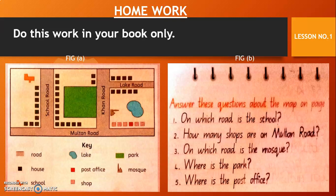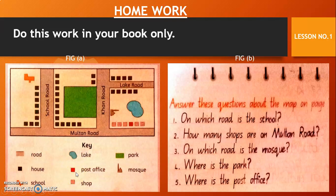On which road is the mosque? This is the mosque — it is on Khan Road. Where is the park? This is the park — it is also on Khan Road. Where is the post office? Let's see from the map key how the post office symbol looks. The post office symbol looks like a red square. This is the red square, so the post office is on Multan Road.